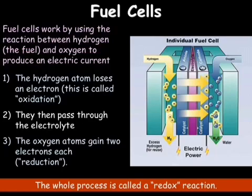In a hydrogen-oxygen fuel cell, the electrolyte is usually a solution of potassium hydroxide, whereas the electrodes are often made of porous carbon — so graphite — with a catalyst present.